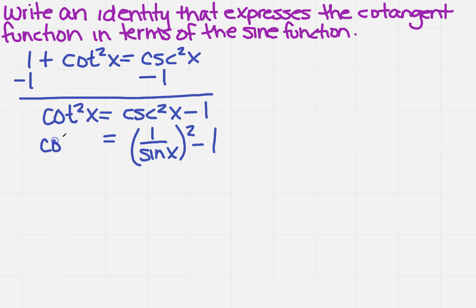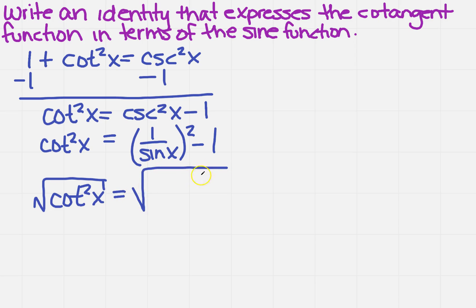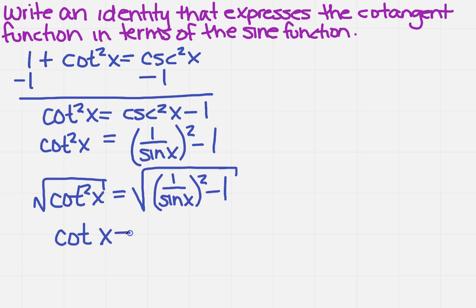That's equal to the cotangent squared of x, but we want it just in the cotangent function — not squared. That means I'm going to have to take the square root of both sides. So I've got the square root of something squared on the left, and on the right the square root of 1 over sine x, all squared, minus 1. I'm left solely with cotangent of x on the left, which is what we want — so far so good.